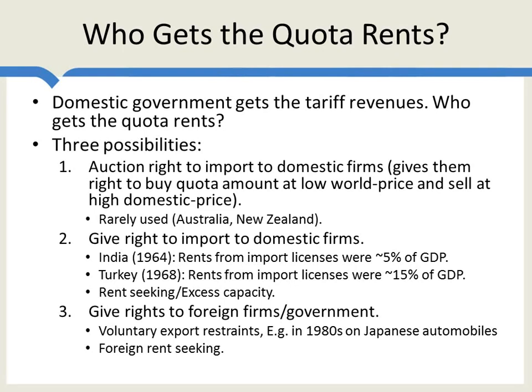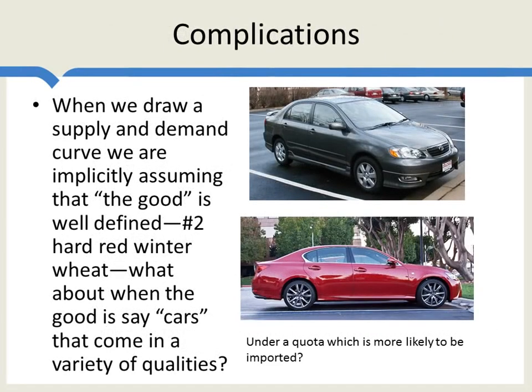Let's look at a few complications. When we draw a supply and demand curve, we're implicitly assuming that the good is very well defined — something like number two hard red winter wheat. Things get more complicated when the good could come in different qualities. When we think about cars, for example, there's a wide variety of qualities.